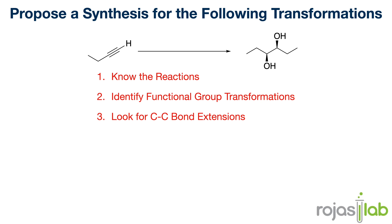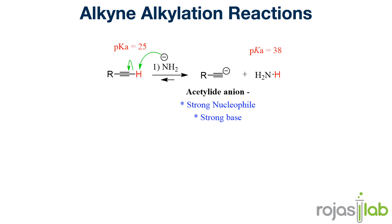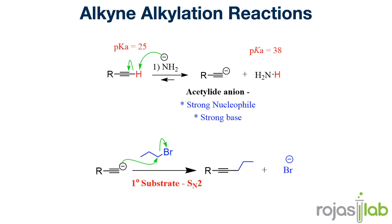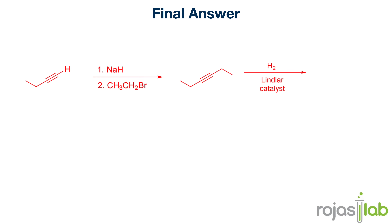In the next reaction, we're turning an alkyne into a diol. To achieve this synthesis, I see that I need to extend my carbon chain. Since I have an alkyne, the best way to do this is through alkyne alkylation. The first step will be to deprotonate the terminal hydrogen to give us a carbanion, which will do a substitution reaction with ethyl bromide. Next, I can partially reduce this alkyne to an alkene using H2 and Lindlar's catalyst, which is specifically going to give me the Z-alkene.